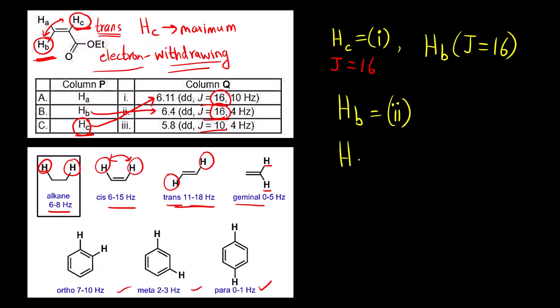Then comes H_A. If you compare H_A and H_C, they are cis to each other. H_A is cis to H_C. It will be having coupling constant of between 6 to 15. That is J is equal to 10. That is option third. For H_A, the correct option is 3.